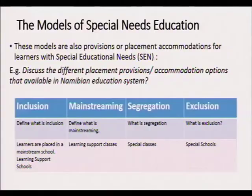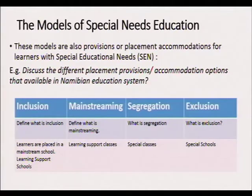That's the mainstream. You also need to define what mainstreaming is. Thirdly, segregation — what is segregation? Segregation was at a special function when it was done in the case of special classes, where learners with disabilities were placed in special classes where their needs were met. You need to know what a special class is. The last one is exclusion, meaning learners are totally not even in a school, but some might be placed in a special school. Those are the four placement provisions, or accommodation options. When you hear the word accommodation, we don't talk about housing — accommodation is about what options are there, how can I help you. That term will also come when we are doing assessment accommodations for learners with special educational needs.